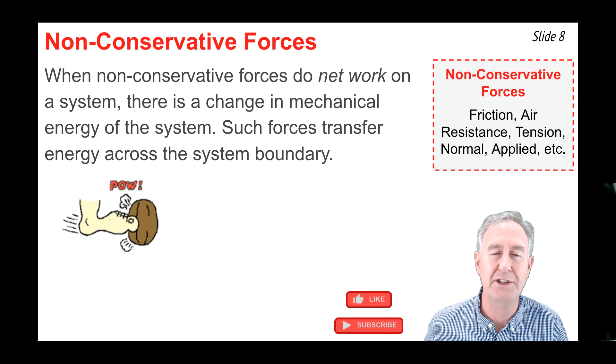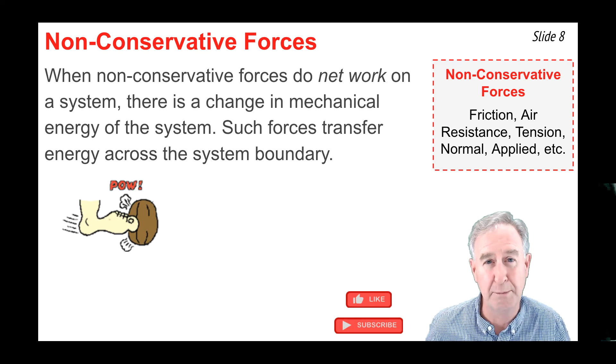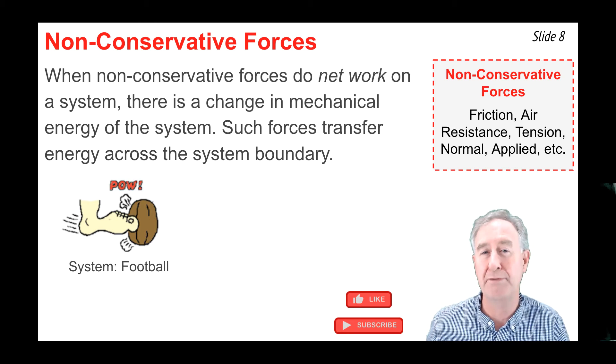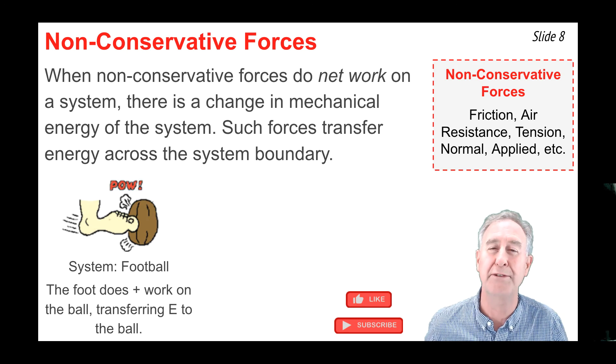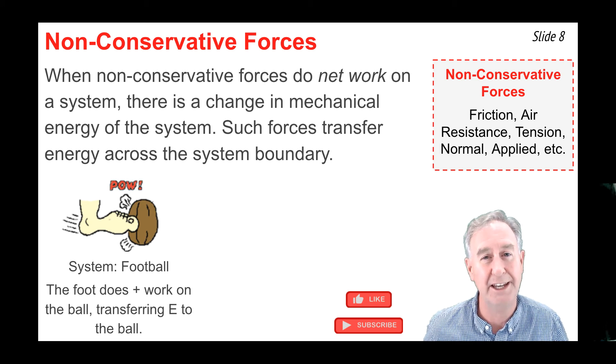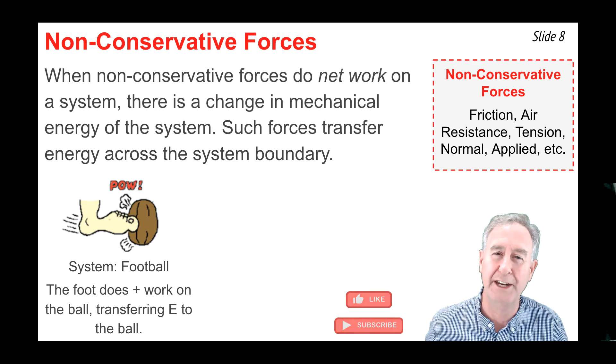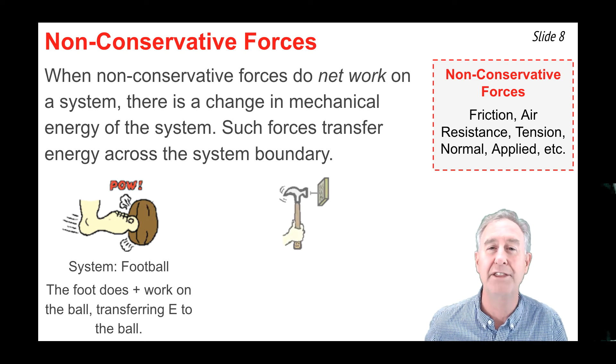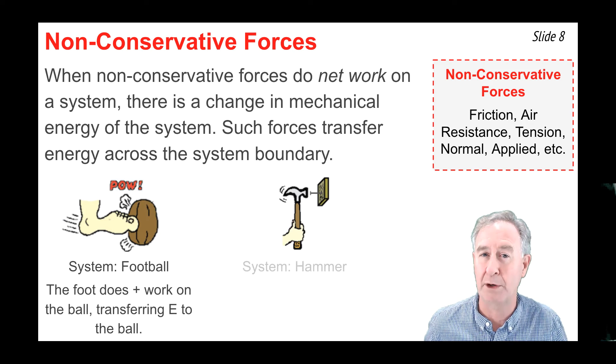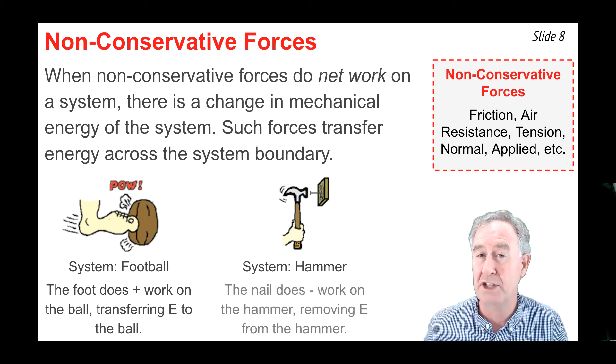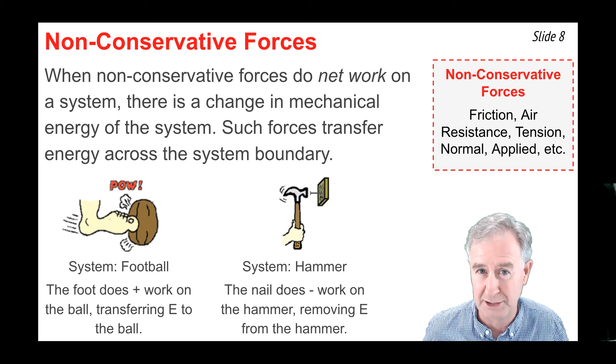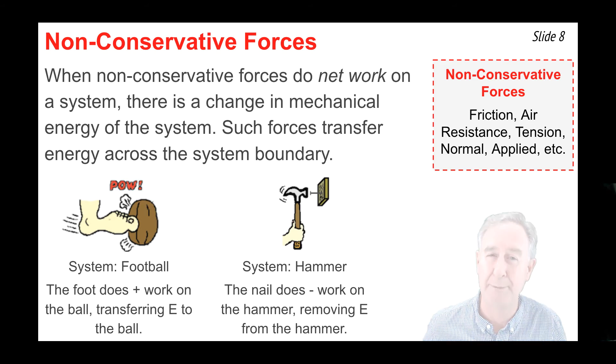As an example, consider this diagram of a foot kicking a football. If we call the system the football, then upon contact with the football, the foot does positive work upon the football and gives it kinetic energy. It changes the total mechanical energy of the football. In this diagram, we'll consider the hammer to be the system, and when it contacts the nail, the nail does negative work upon the hammer in order to transfer energy out of the system, thus reducing the kinetic energy of the moving hammer.